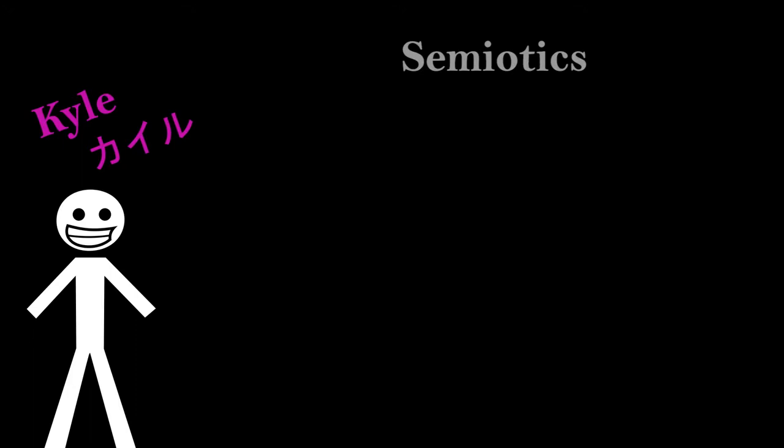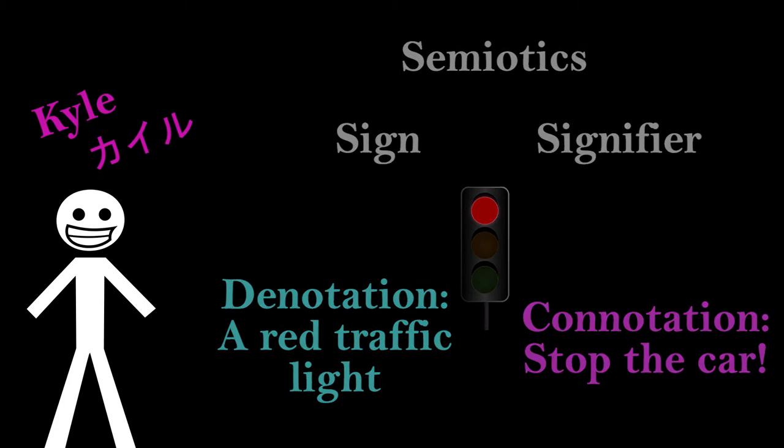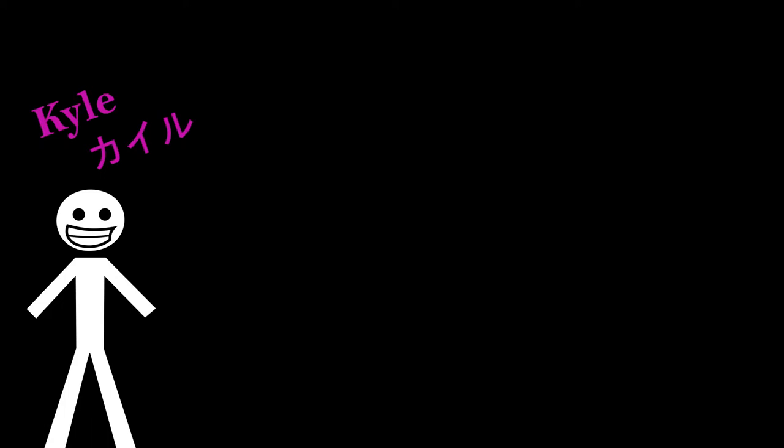Semiotics discusses the signs and signifiers in the objects we interact with, and how their denotation, or literal meaning, is different from the connotation, or the message we receive from it. Using semiotic analysis, I present to you my analogy that hopefully doesn't make the process even more confusing.